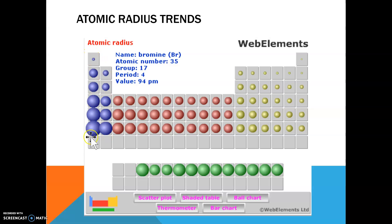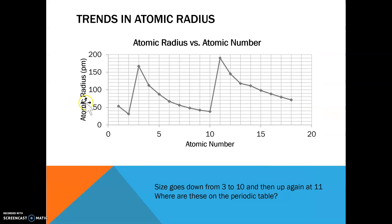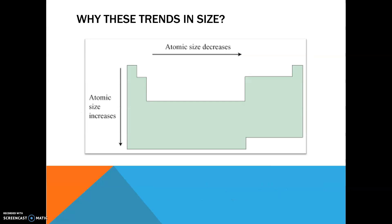You probably would have guessed that atoms get bigger going down a column. They do get bigger as we go down. Here's one down the same column — it does get bigger and bigger. As we go across a row it gets smaller, but when we start a new row it gets bigger. So on your blank periodic table, write an arrow going across the row with the words 'atomic size decreases,' and an arrow going down with 'atomic size increases.' Pause and write this on your blank periodic table.